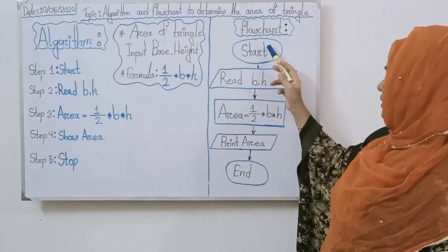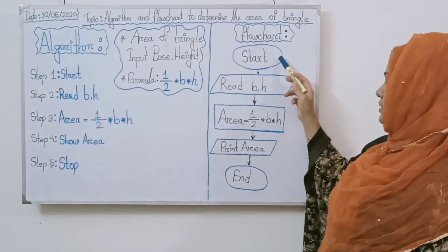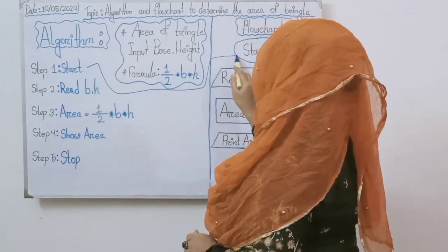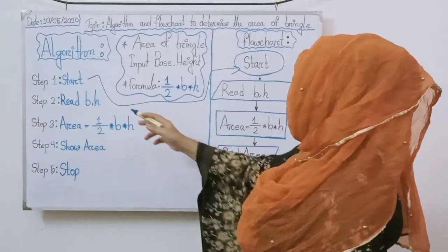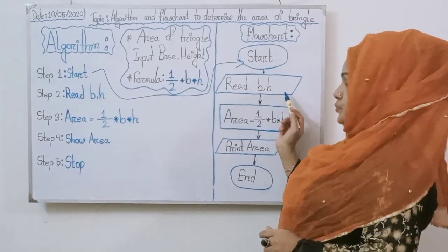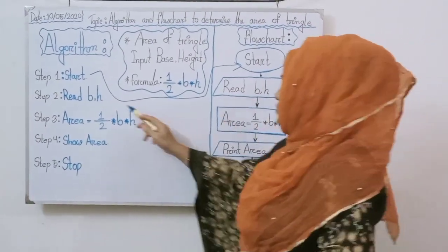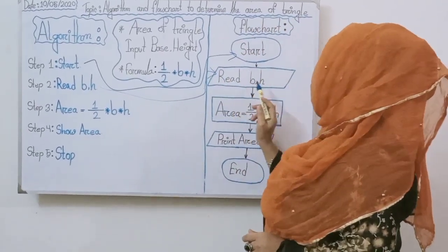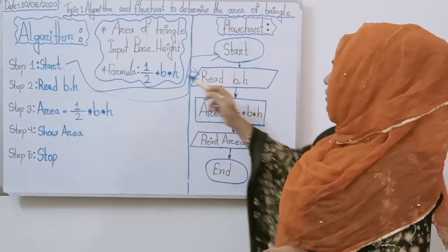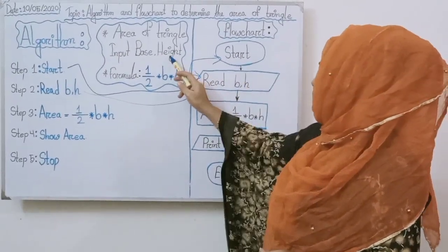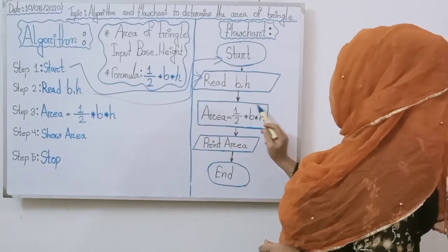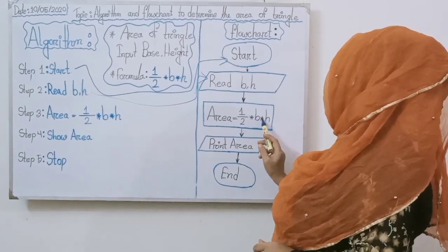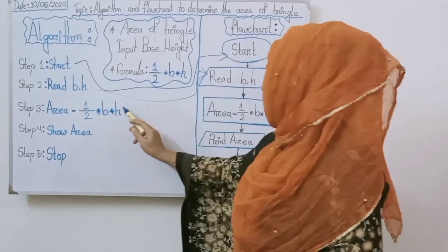This is the flowchart. First, this is the beginning symbol — Start. That means Step 1. And 2nd, it is input-output. Step 2: Read base and height. Base and height. And this is the processing symbol.